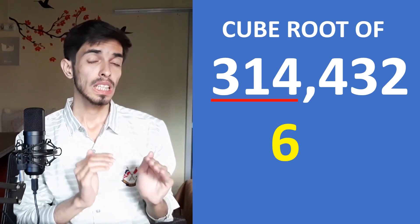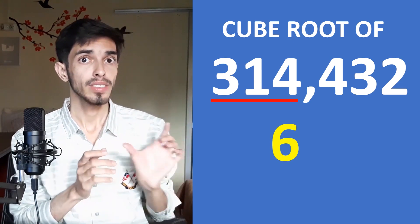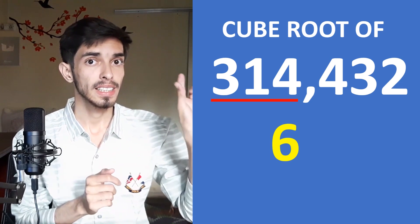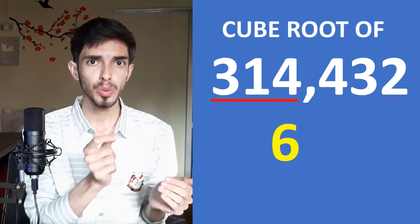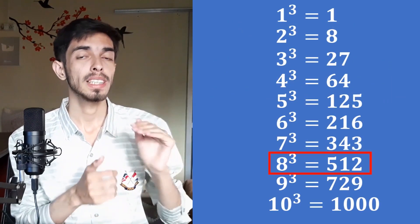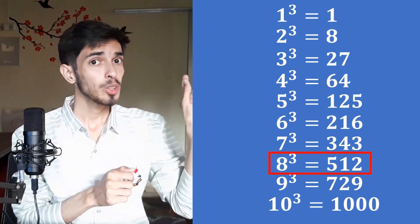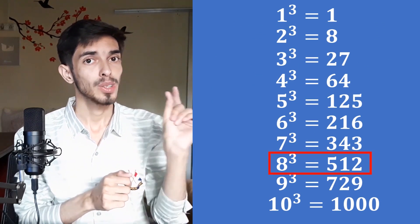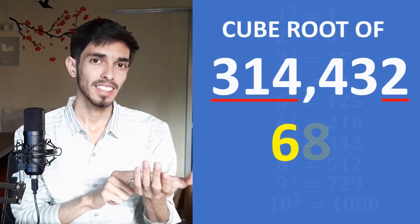Now to determine the second digit, see what digit this number ends with — which is 2. See which cube ends in 2: only 8³ ends in 2. So the answer is 68.